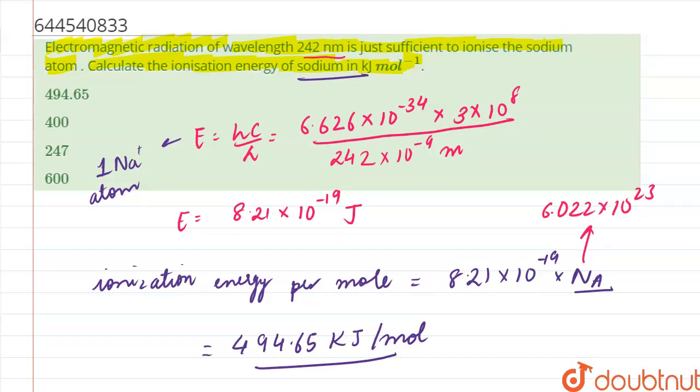So we get an answer of 494.65 kilojoule per mole, which is basically option number A. So our answer to this question is option number A.